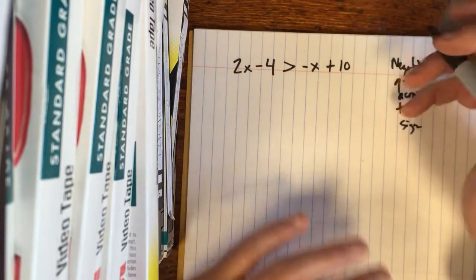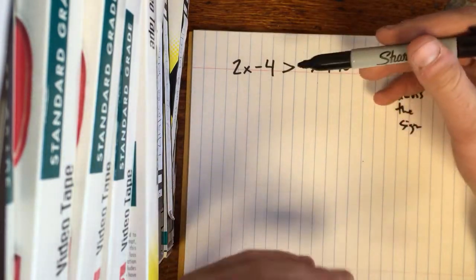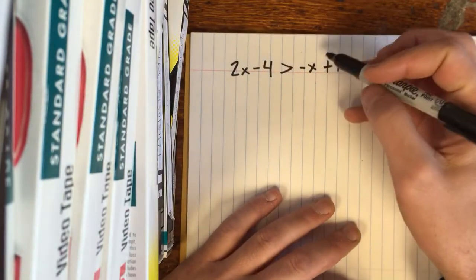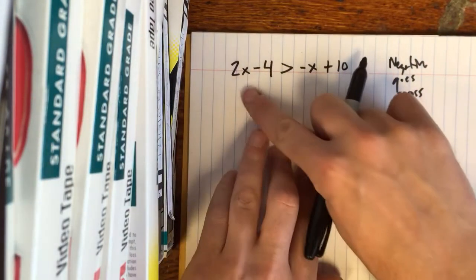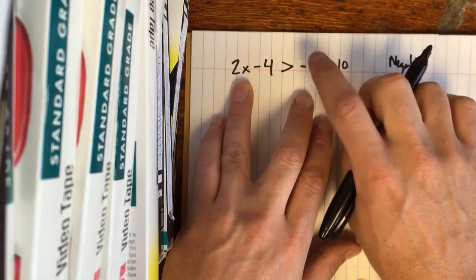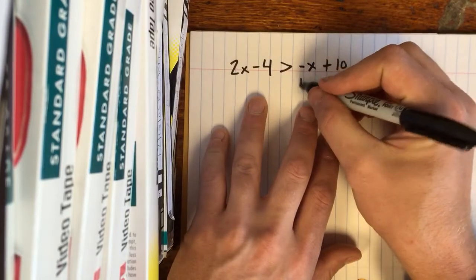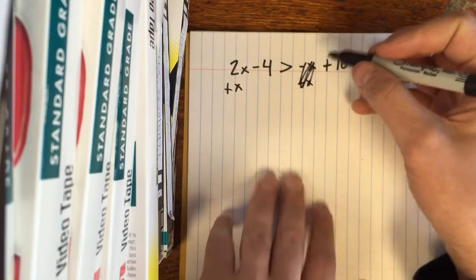So let's just start working it and we'll see what happens. I want to get my regular numbers together and I want to get my X's together. The easiest way to do that is to take the smaller X and put it on the other side. So you got 2x and negative X, the easiest one to get rid of is this one. So you add X to both sides, that becomes zero and cancels out.